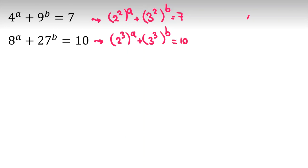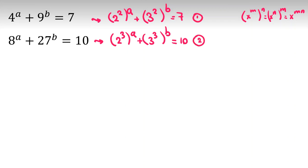By the power rule, we know x to the m to the n equals x to the n to the m equals x to the mn. So here we can switch m and n. Now we can conclude. Let me call this the first equation, second equation. On the first equation we can conclude: 2 to the 2a plus 3 to the 2b equals 7.